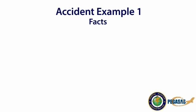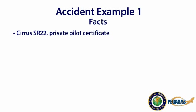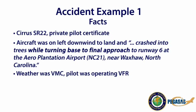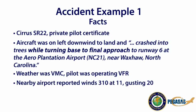In accident example number one, the aircraft was a Cirrus SR-22 flown by a private pilot. The aircraft was on left downwind to land and crashed into trees while turning base to final approach to runway 6 at the Arrow Plantation Airport near Waxhaw, North Carolina. The weather was VMC, the pilot was operating VFR, and winds at a nearby airport were reported at 310 degrees at 11 knots gusting to 20 knots.